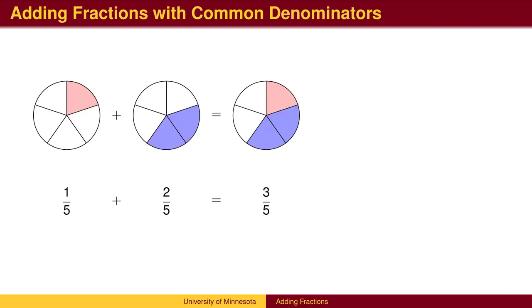Recall that fractions are based on the notion that some standard unit is divided in equal sized pieces. In this case, each circle is divided into 5 equal pieces. When we add 1 piece to 2 pieces, we get 3 pieces.